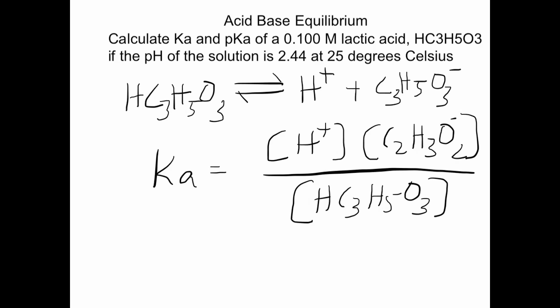Now what we have been provided with is the pH of this acid, the value is 2.44. So the first thing to do would be determine the hydrogen ion concentration from the value of pH, substitute it in this equation. For that we can actually generate an ICE table, that's what we're going to do next.